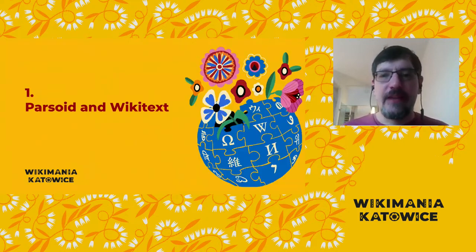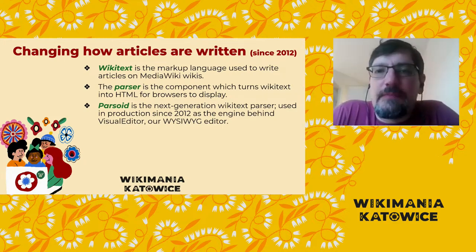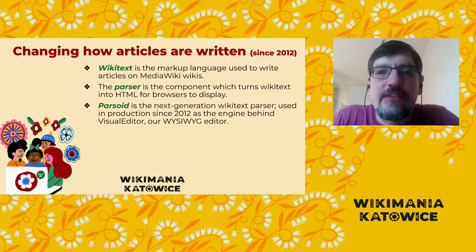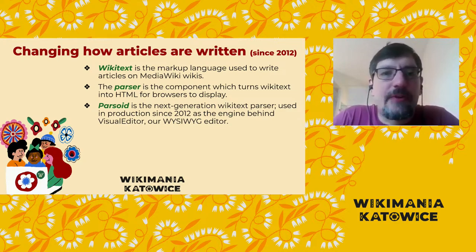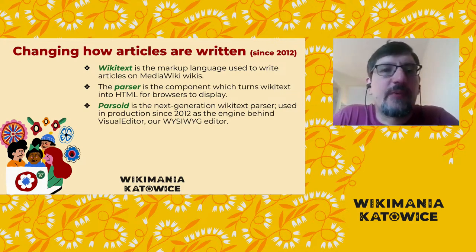We'll start with Parsoid and Wikitext and begin by defining some terms. Wikitext is the markup language used to write articles on MediaWiki wikis. What the browser actually displays on the page is HTML. The parser is the component that turns one into the other — turns the Wikitext that you write when you write an article into HTML that the browser can display. And Parsoid is the new parser we've been working on since 2012.